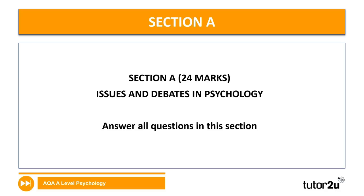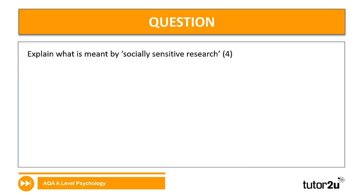You're going to answer all the questions in this section. I really encourage you to pause the video for each question, and then we'll go through and review the mark scheme. So let's start with the first question: explain what is meant by socially sensitive research for four marks. When we say explain what is meant, we are defining socially sensitive research in quite a lot of detail — mainly because it's four marks, so we're not just giving a one-mark definition.